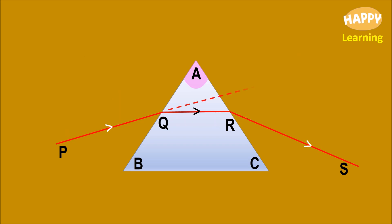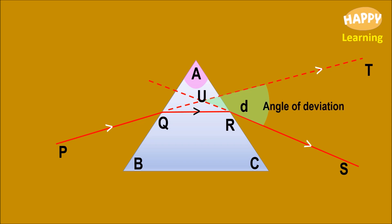The angle of emergence is I2. If we extend the incident ray PQ, it will be PQT, and extend the emergent ray RS in the backward direction. The incident ray and the emergent ray will meet at a point. The angle between the incident ray and the emergent ray is called the angle of deviation.